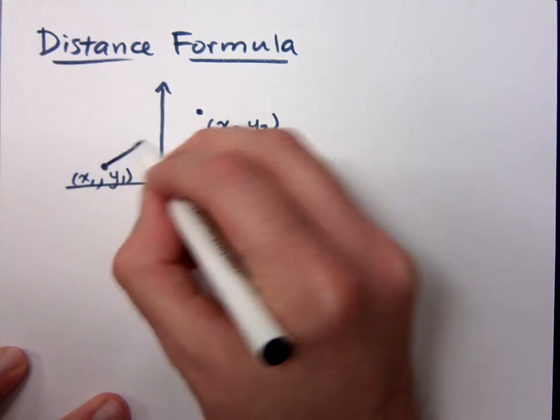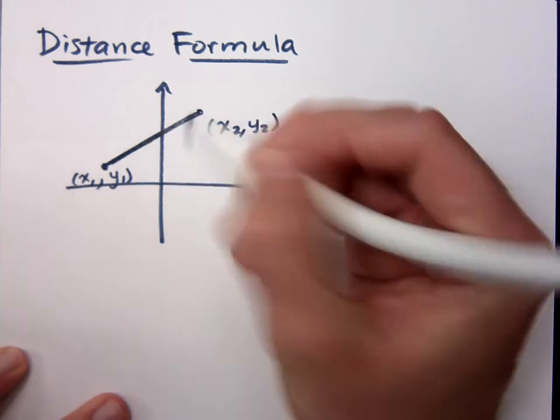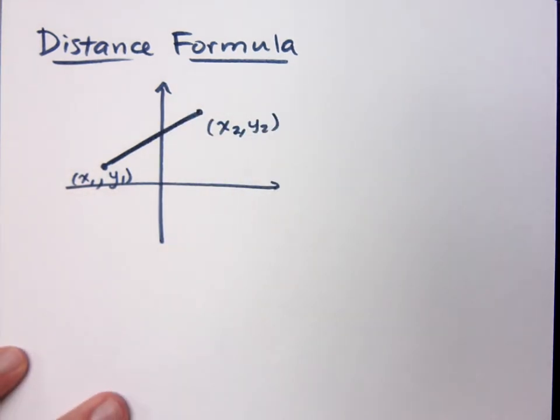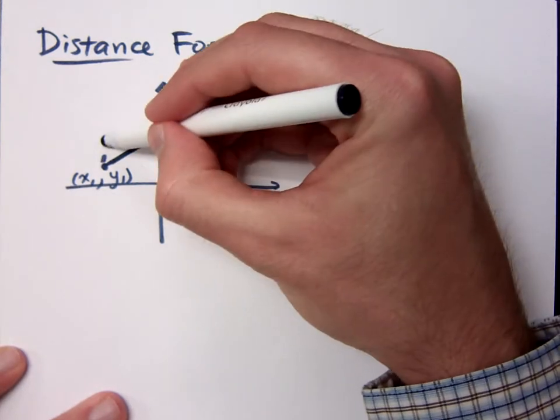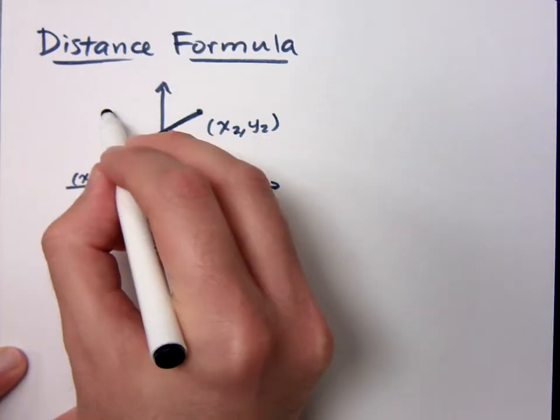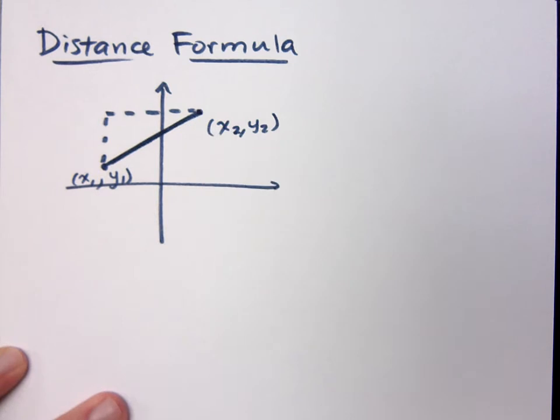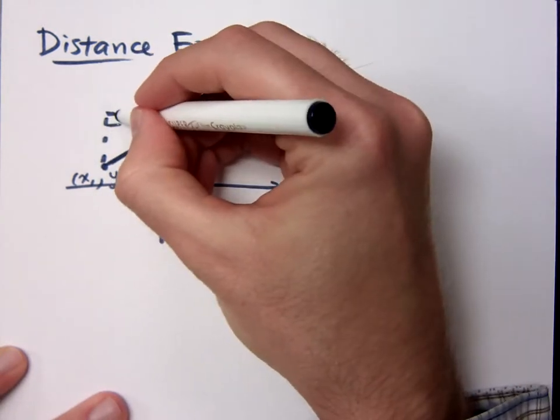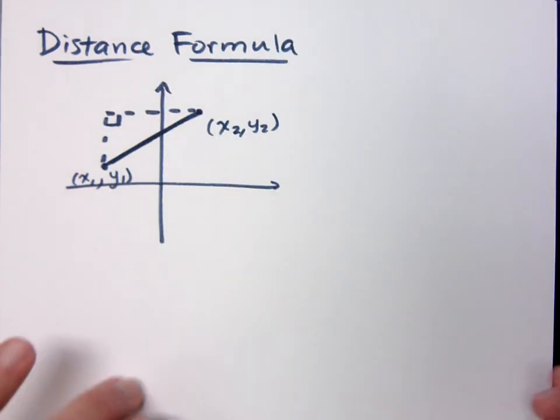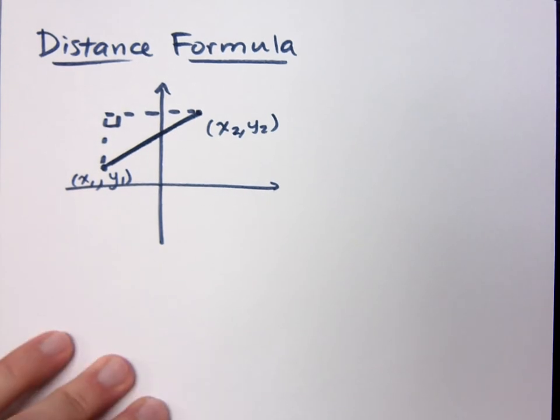The distance is going to be the straight distance from one point to the next. And the way that we find that distance is by using a little guy that we know as the Pythagorean theorem. If you create a right triangle here, you'll see that the distance ends up being what part of the right triangle? It ends up being the hypotenuse.